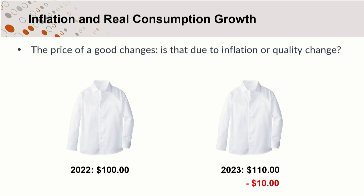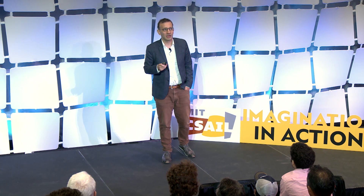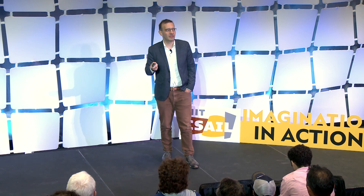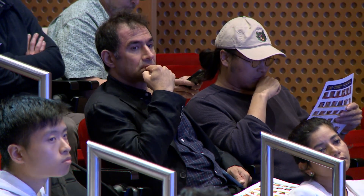But now consider a situation that's maybe more typical: it's $5 cheaper, but also the quality has changed. Have you become richer or poorer? It's $5 cheaper, but for a lot of people the quality is worse. This might seem like an impossible question — how much exactly is it worth that the fabric of the shirt changed? But we have to answer it in order to have any hope of actually measuring the cost of goods over time, because prices and quality are changing simultaneously.